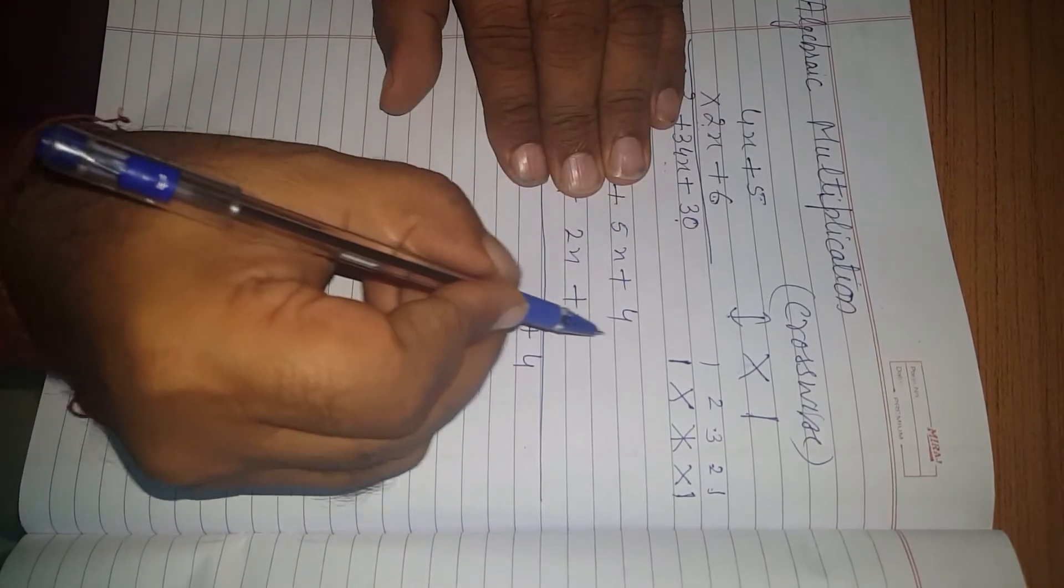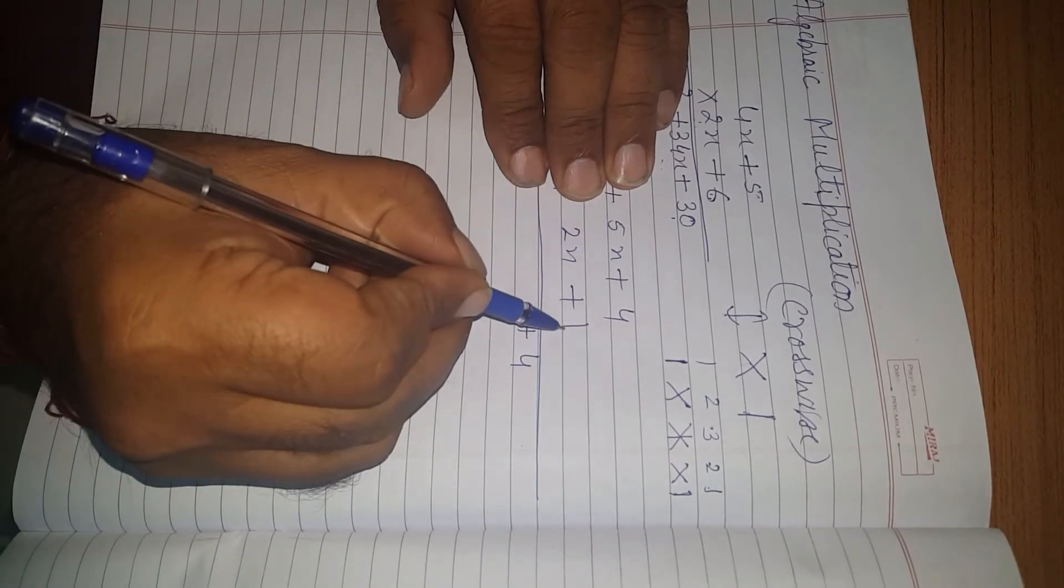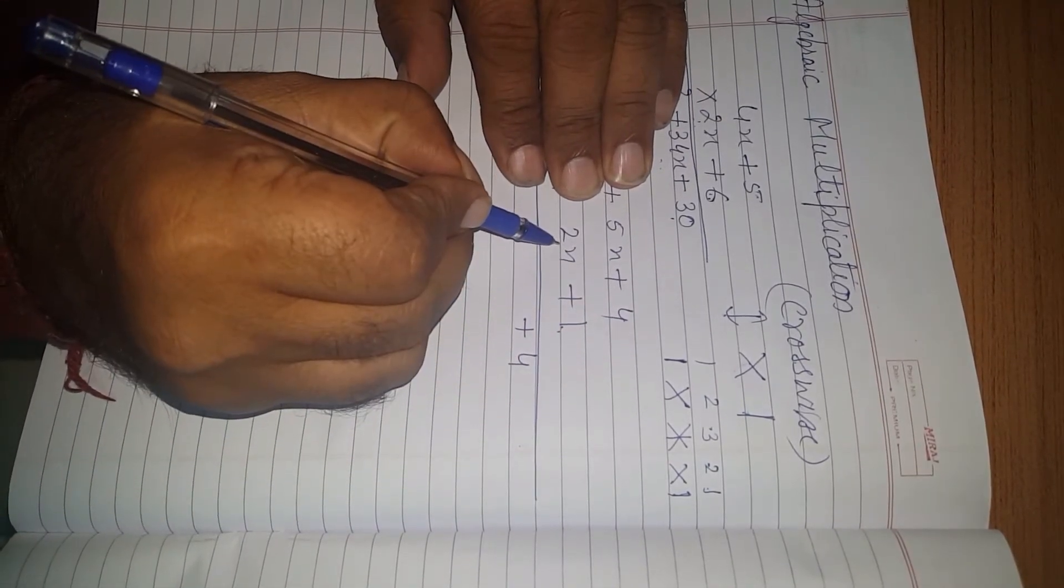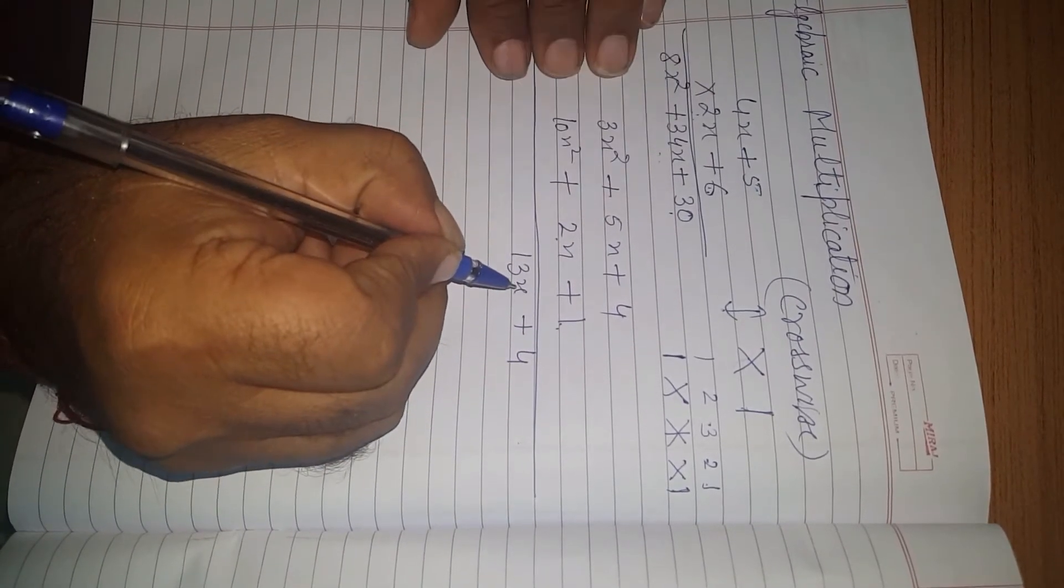Second is same as we have done already. That is the crosswise multiplication. So, 5 into 1 is 5x, and 4 into 2x is 8x. So, 5x plus 8x, that is 13x.